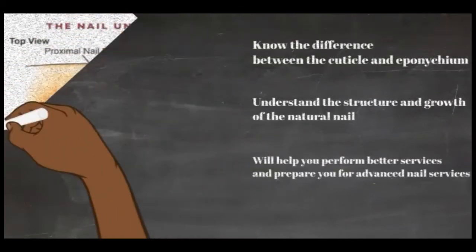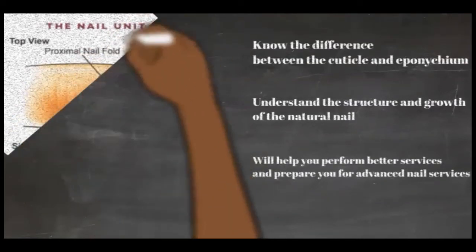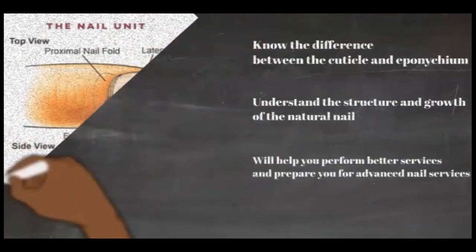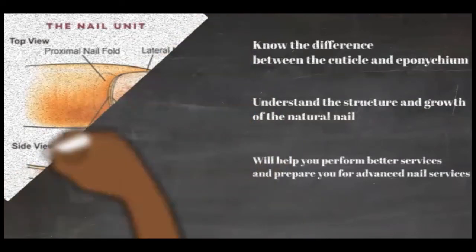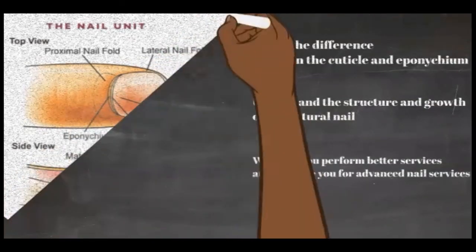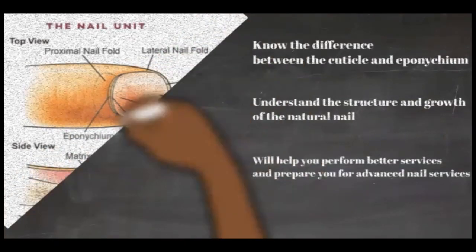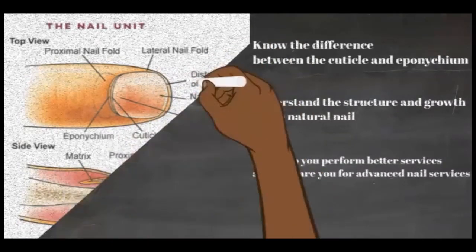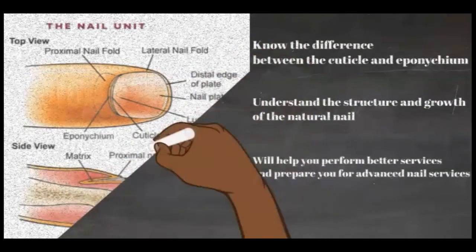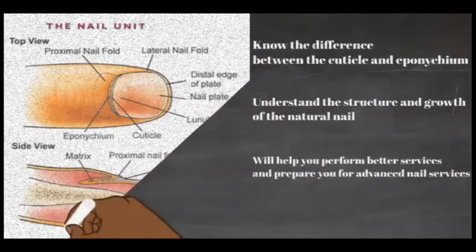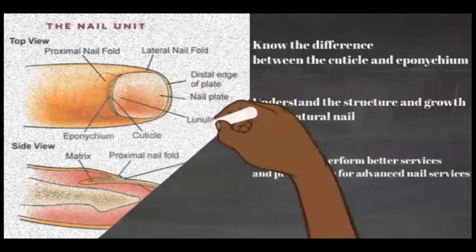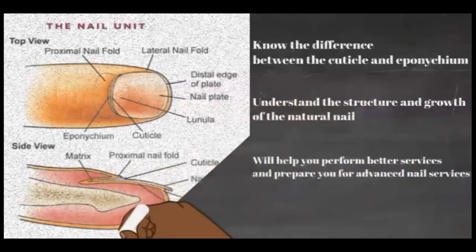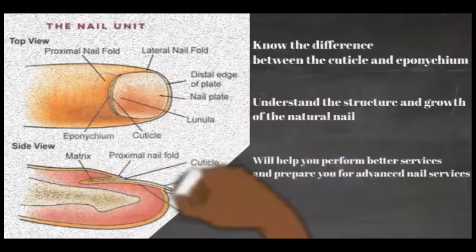A normal healthy nail is firm and flexible, shiny, and slightly pink in color. A healthy nail should be whitish and translucent in appearance, with the pinkish or beige color of the nail bed below showing through. The natural nail is divided into several major parts including the nail bed, matrix, nail plate, cuticle, eponychium, hyponychium, specialized ligaments, and nail folds.